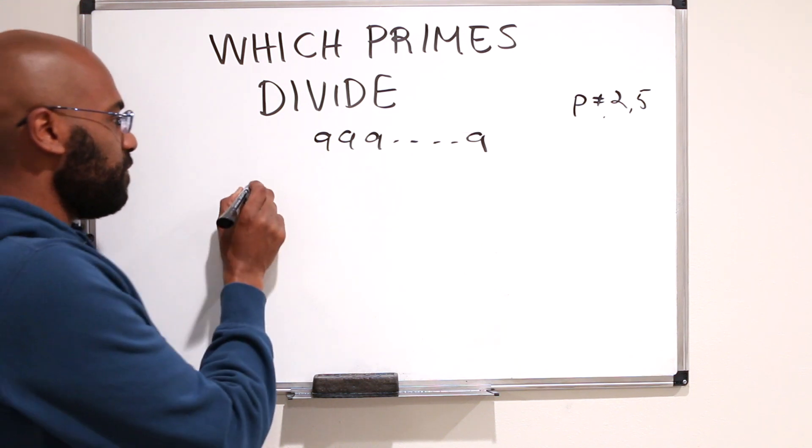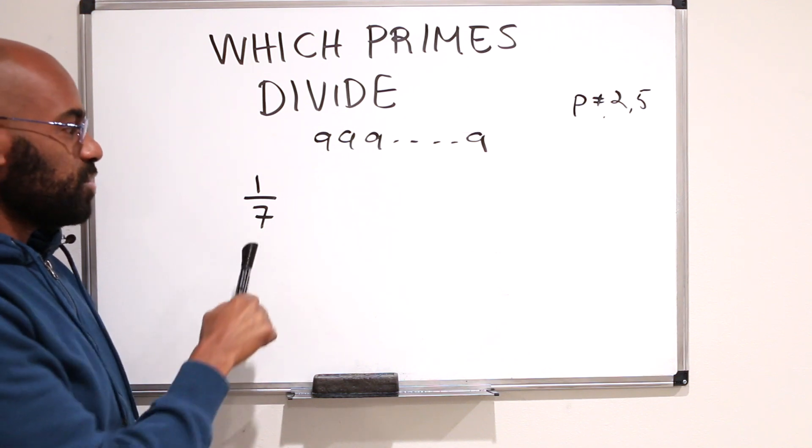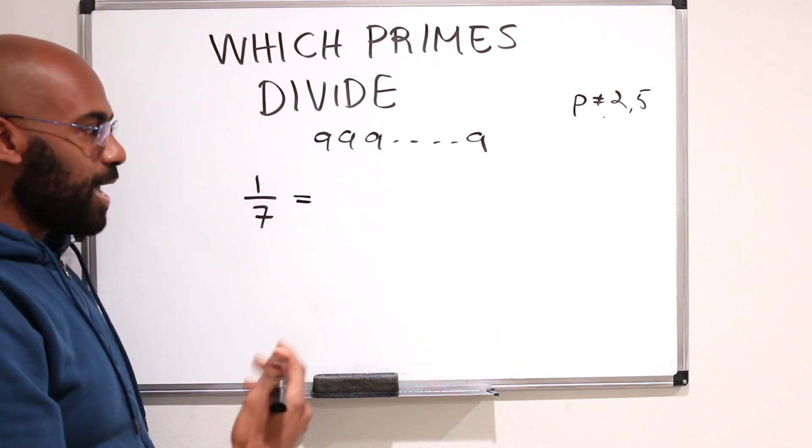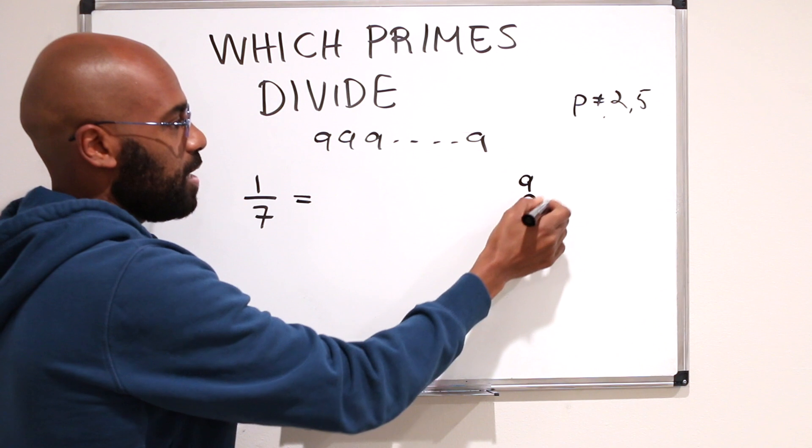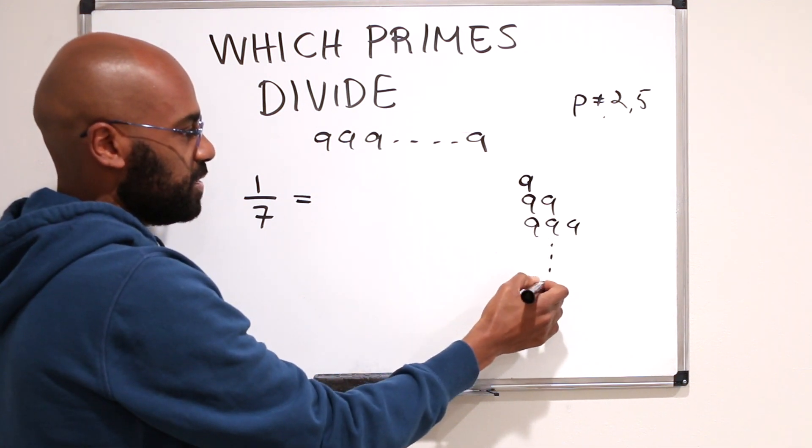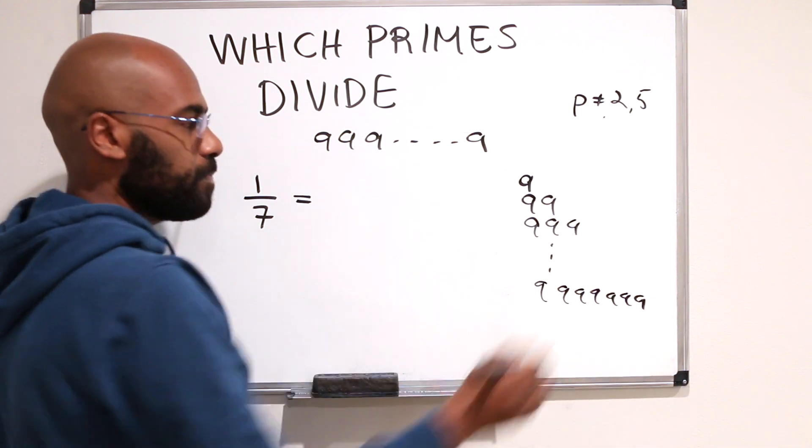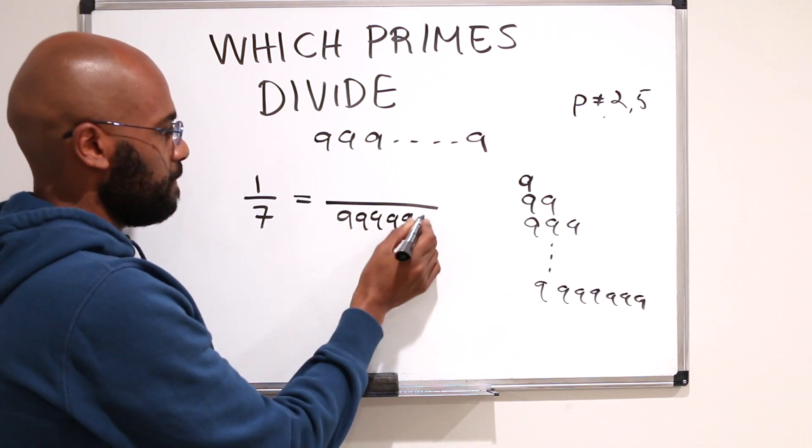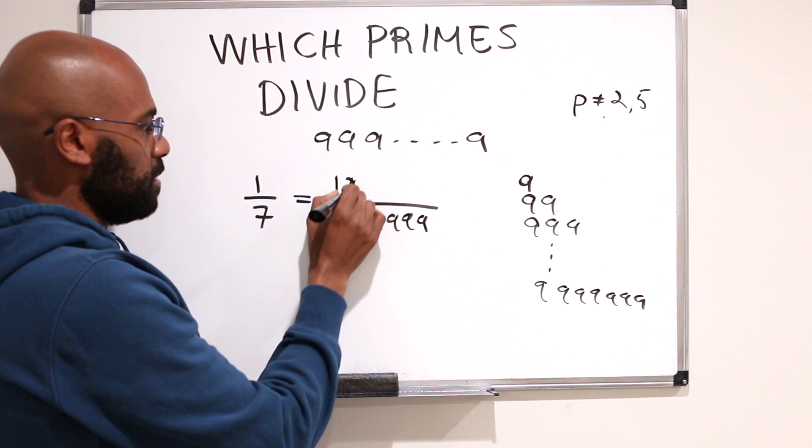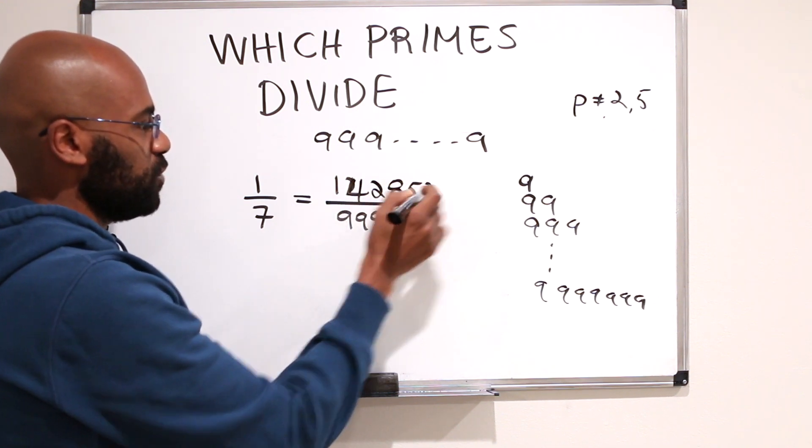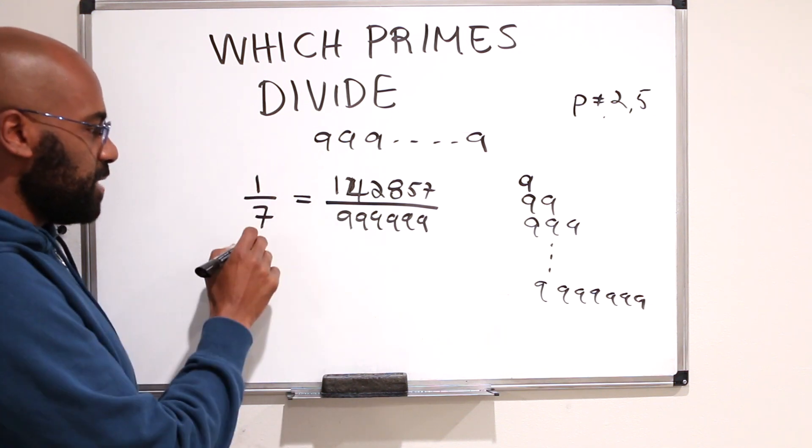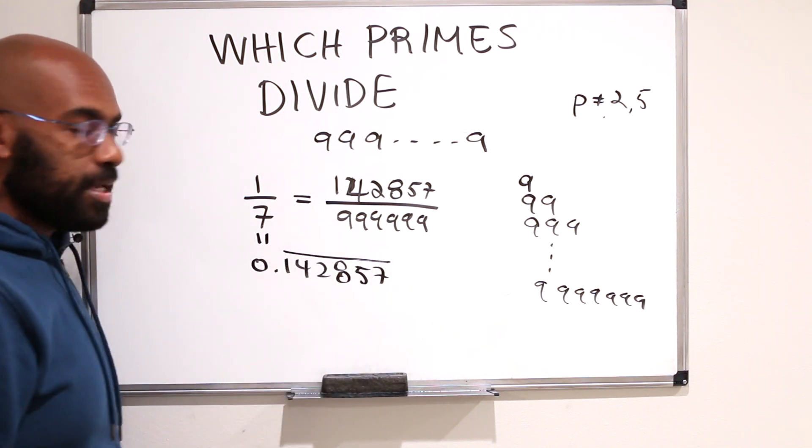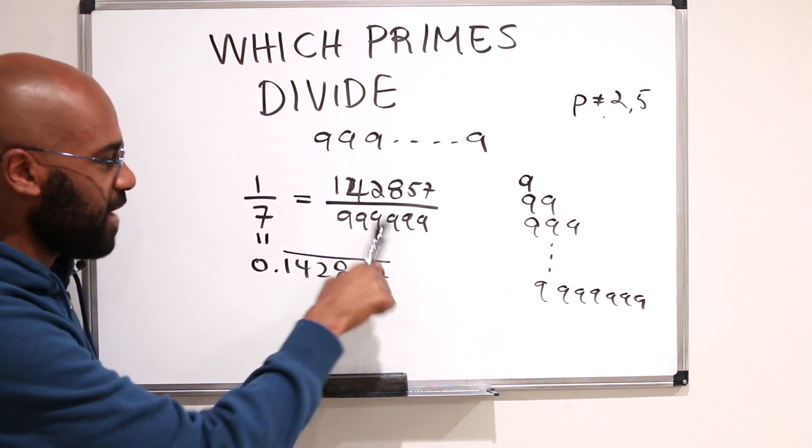Now, why is that helpful? Well, let's think about the following. Let's think about a number like 1 over 7. So 7 divides some number that can be written as a bunch of 9s. So we can go searching for it. And actually, given our argument that we listed, it's going to have to be one of the 7 numbers here. Okay, so it turns out that in this case, it's 999999. And that gives us a numerator of 142857 if you actually do the division. And the decimal representation of this number is 0.142857 repeated.